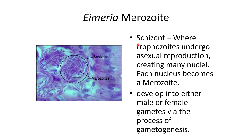Here's showing the merozoites within a schizont where asexual reproduction occurs. The merozoites will eventually develop into either male or female gametes — male known as microgamete, female known as macrogamete — and they will eventually form the oocyst. This is the asexual reproduction form that occurs within the intestines of the host.